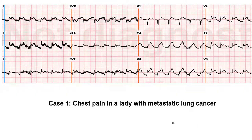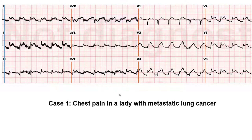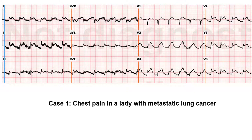This is a 60-year-old lady having chest pain on the floor with metastatic lung cancer. The cardiologist consulted considered it pericarditis related to metastatic lung cancer and pericardial effusion, noting diffuse low QRS voltage — he thought pericardial effusion was causing the low voltage with pericarditis causing the ST elevation.